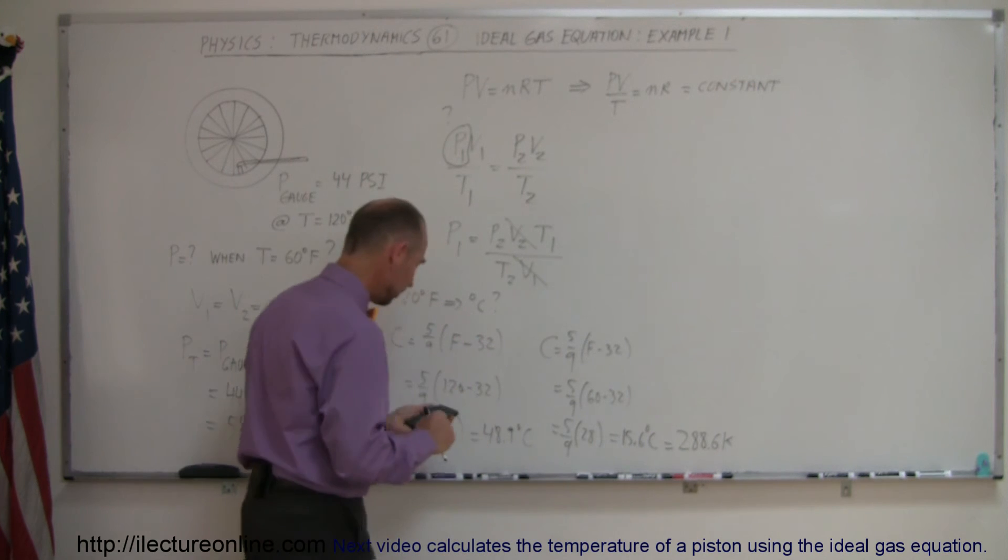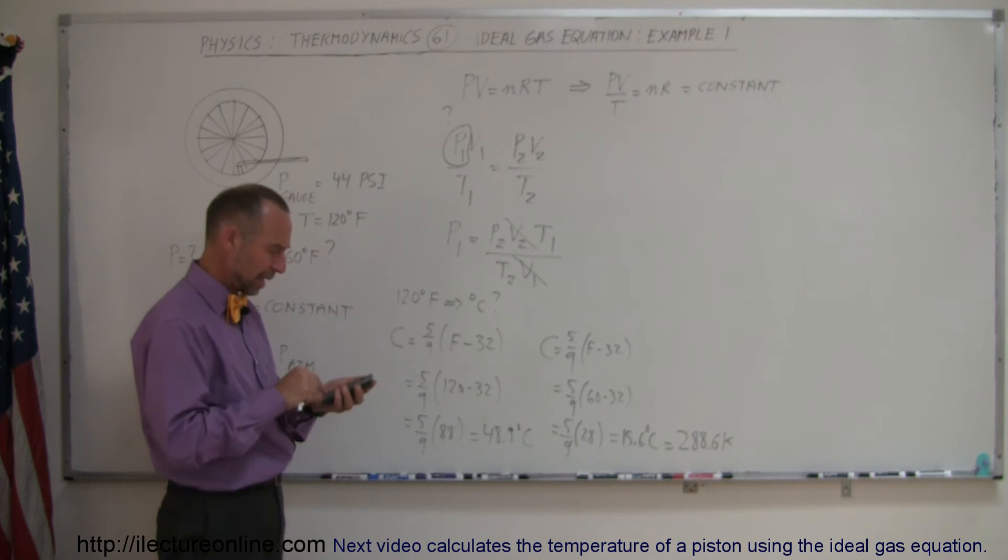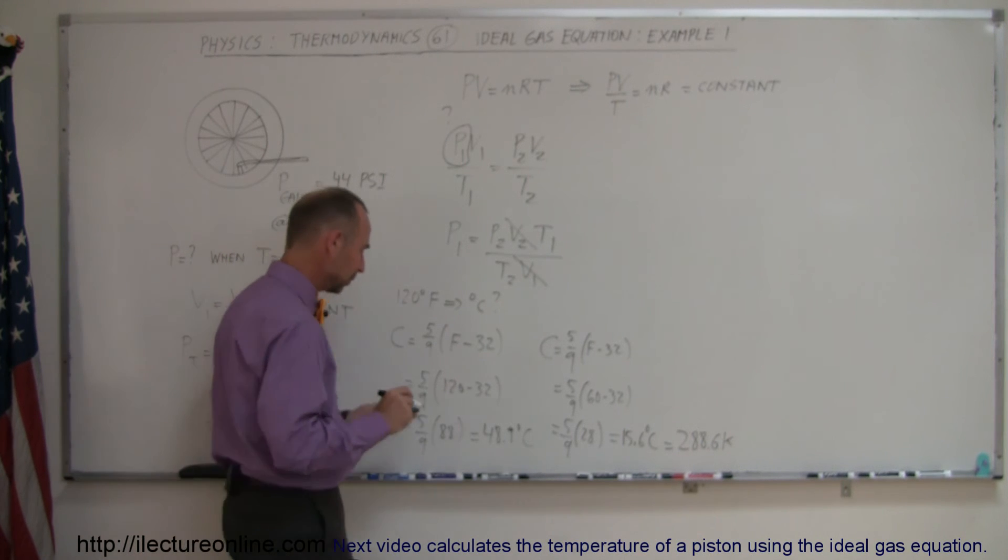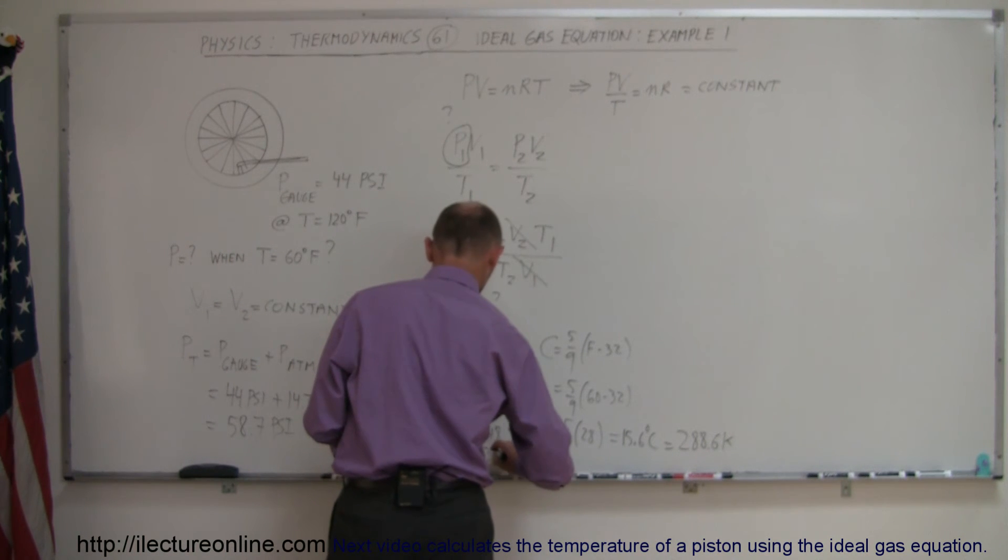And we have to do the same over here. We have 48.9 plus 273. And that would be 321.9 Kelvin. So we first converted Fahrenheit to centigrade degrees. Now we converted centigrade degrees to Kelvin degrees.